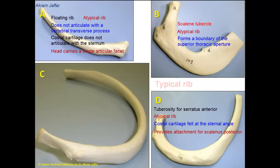Typical rib — as we have mentioned, C is a typical rib. The others — the 1st rib, 2nd rib, 11th and 12th ribs — they are atypical.